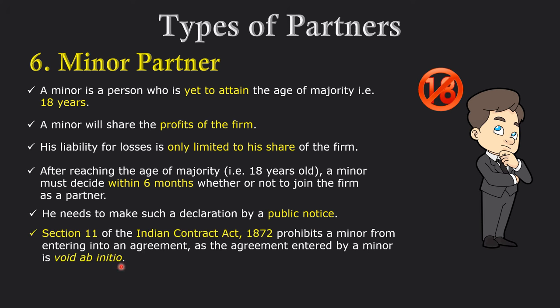One more thing we should all know: according to Section 11 of the Indian Contract Act 1872, if a minor enters into any agreement, that agreement will be declared void ab initio — meaning that agreement is invalid from the very beginning.